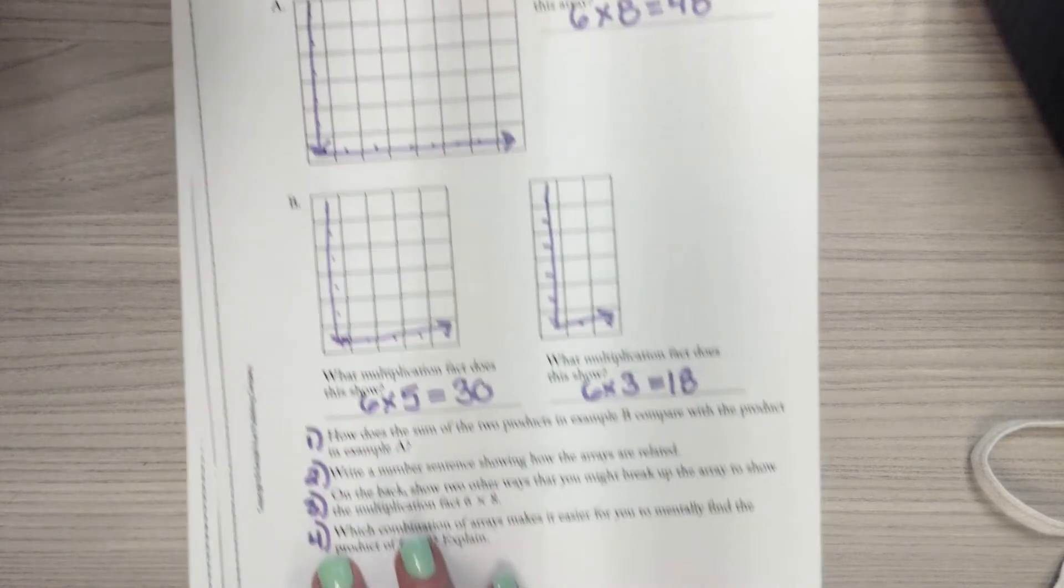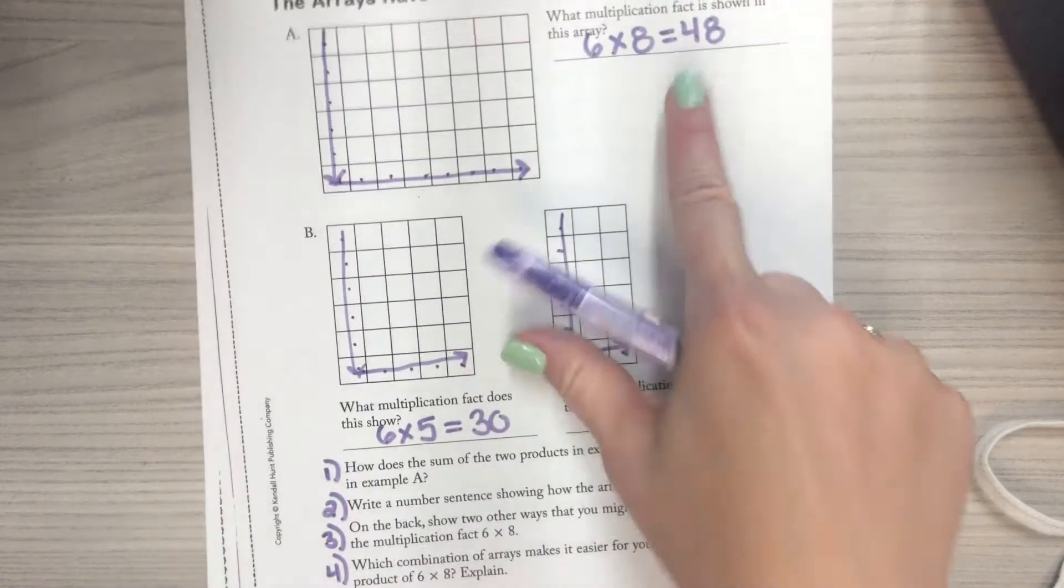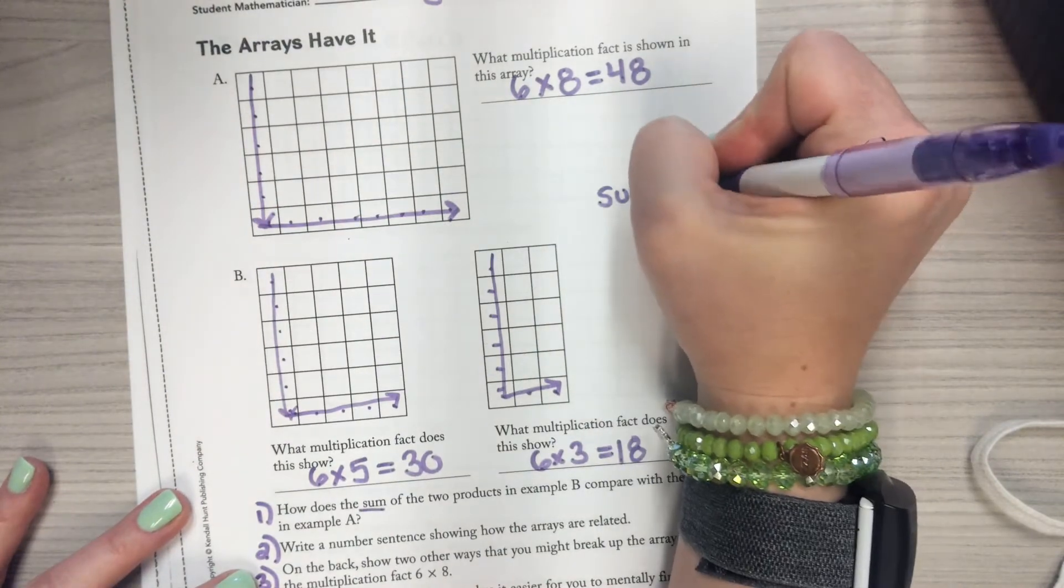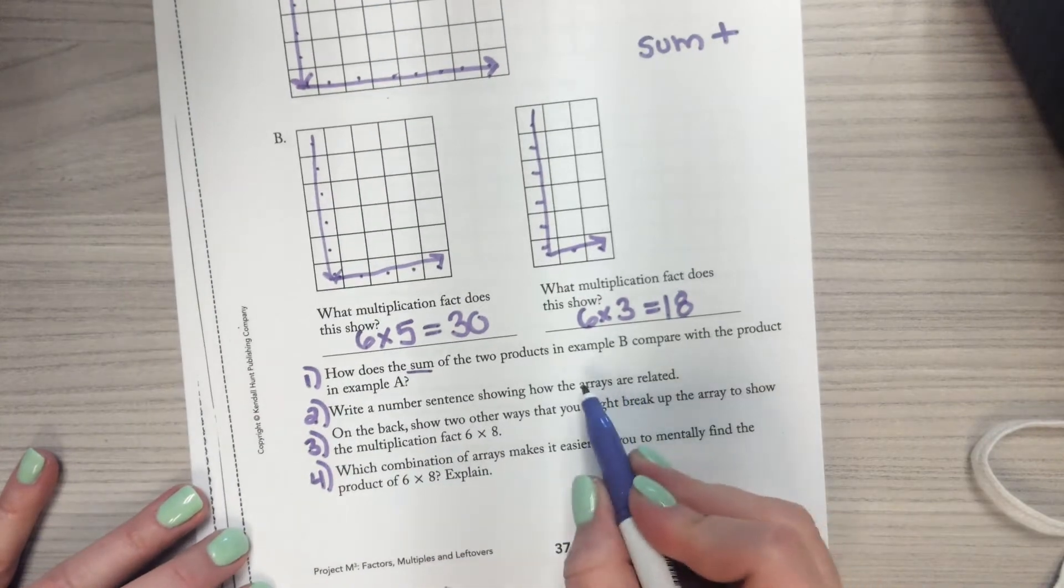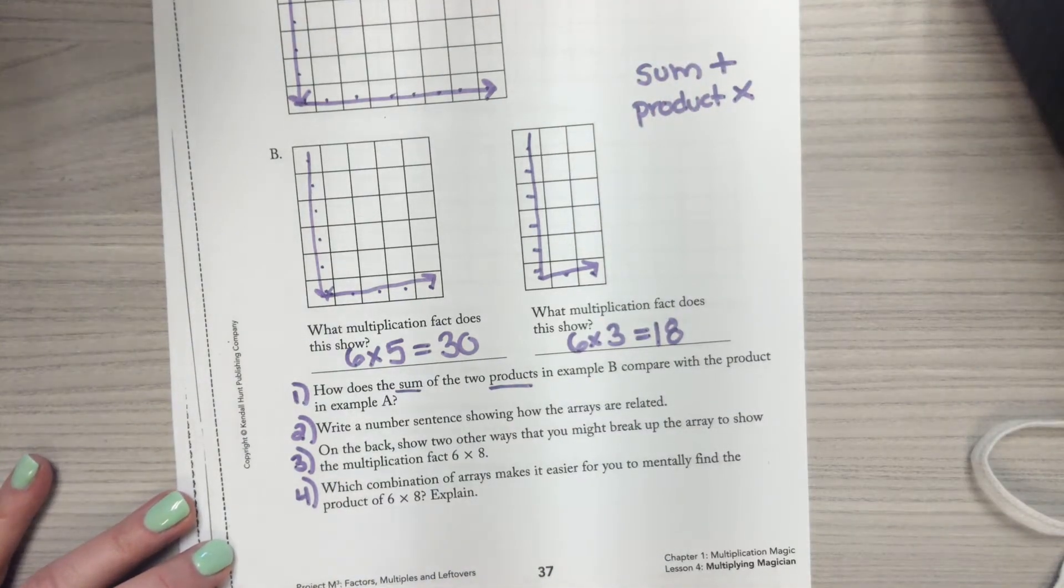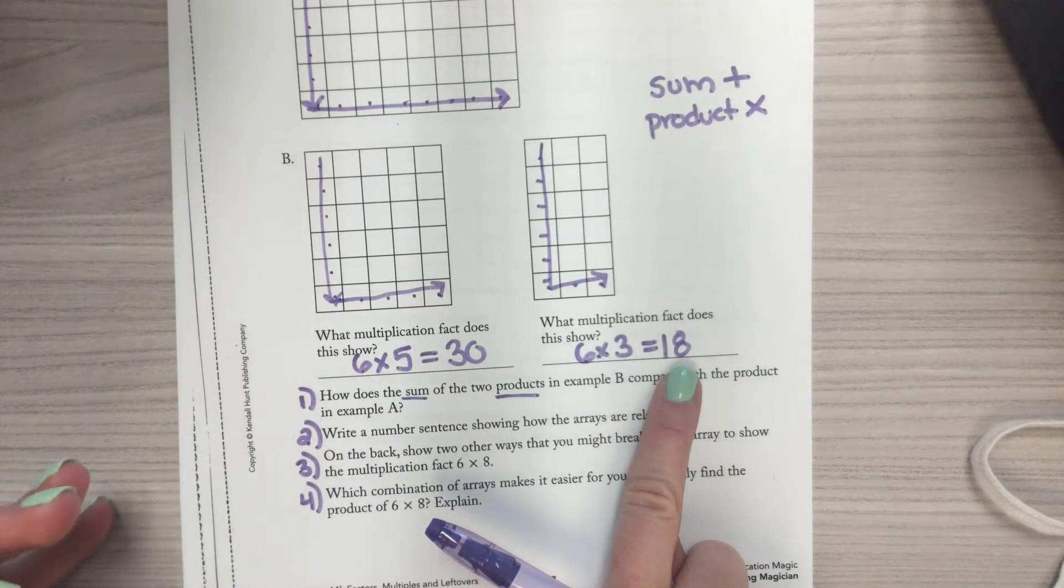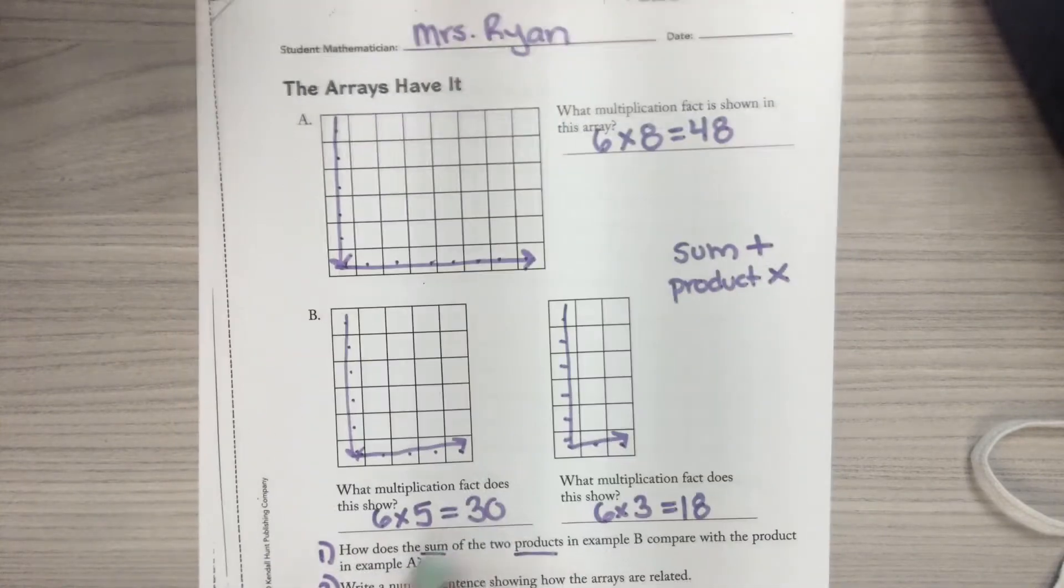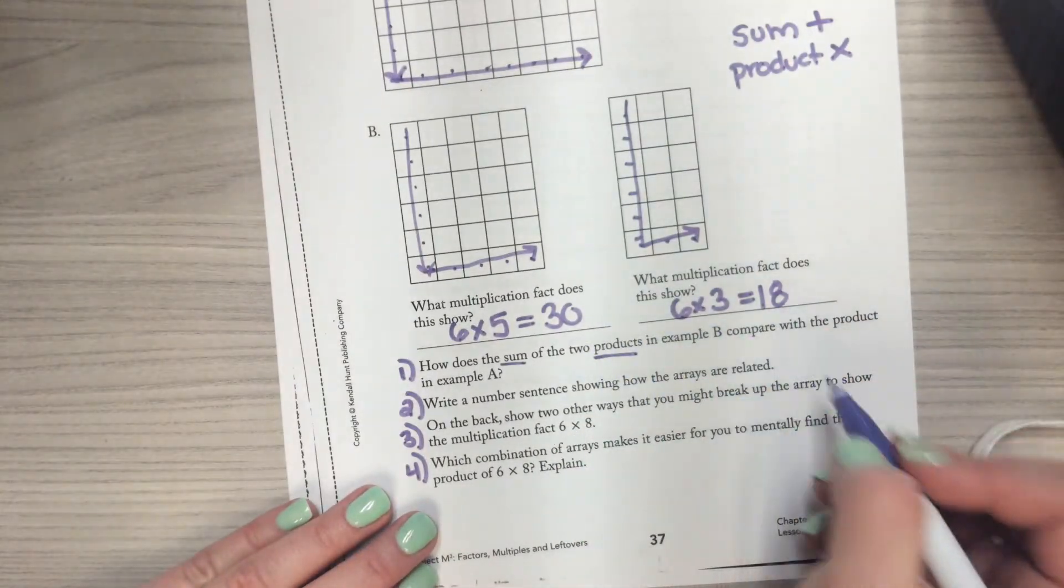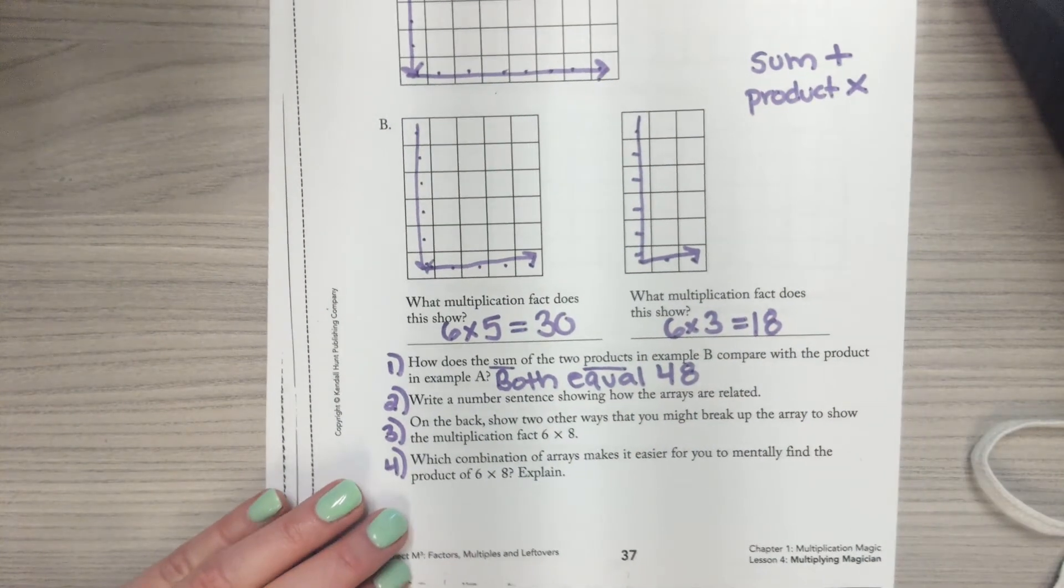The question reads, how does the sum of the two products in example B compare with the product in sample A? Well, this has a lot of math vocab in it, right? First, you need to know that a sum is the answer to an addition problem. And then you need to know that a product is the answer to a multiplication question. So what is the sum if we add up the answers of the products in B? Well, 30 plus 18 is 48. And what is the product in example A? 48. See that? So how do they compare? Both equal 48.